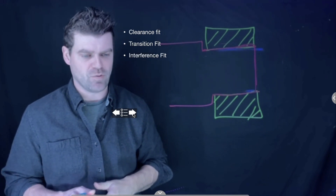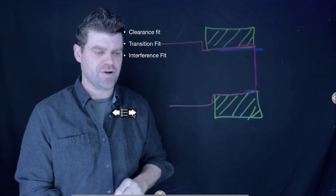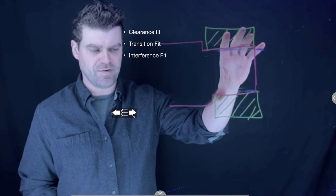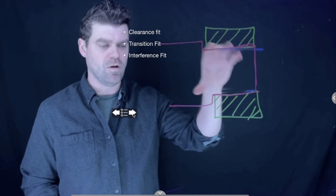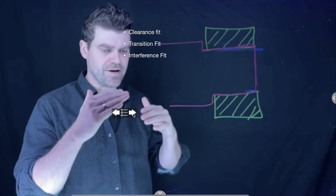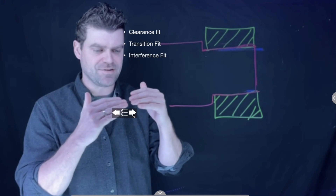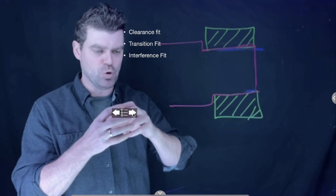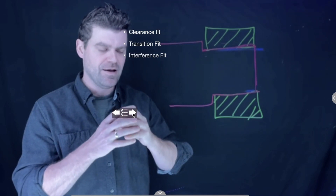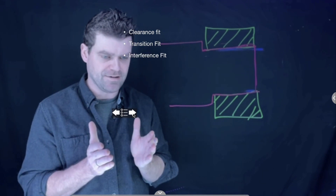A transition fit is one that a lot of people get confused about. It means that the shaft and the hole can be either an interference or a clearance fit — it's basically size for size, and doesn't matter one way or another. It can be slightly loose with a slight clearance fit, or it can have a slight interference fit. The reason for that really comes down to machining and saving costs.